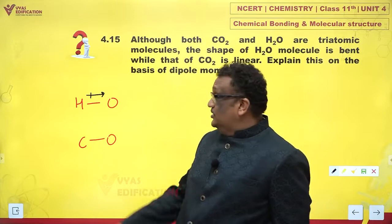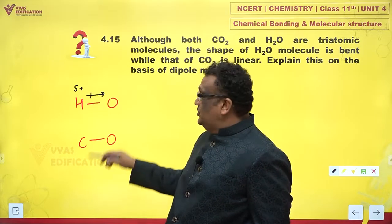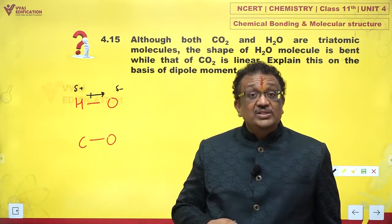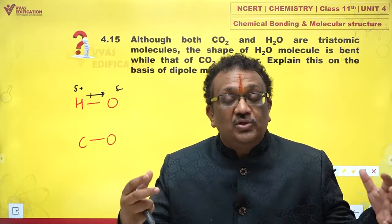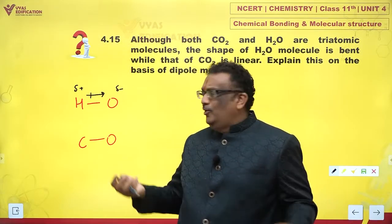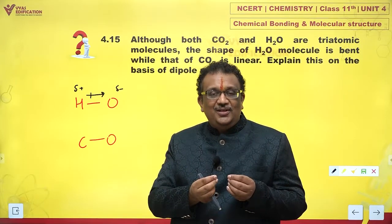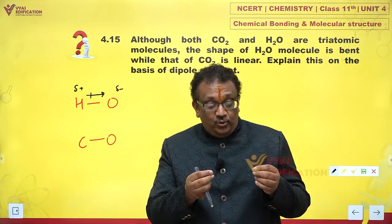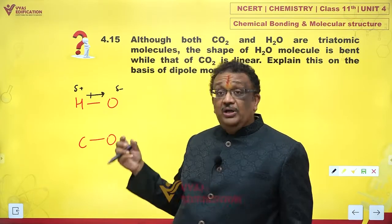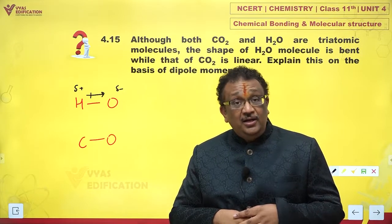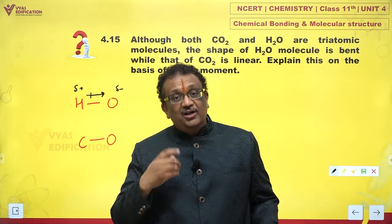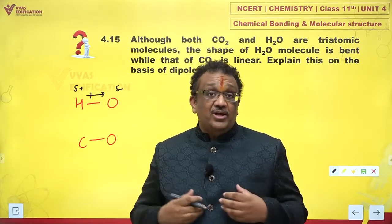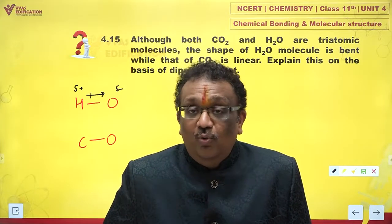If that is the case, hydrogen will develop a slightly positive charge and oxygen will develop a slightly negative charge. This is what we call an electrical dipole — two opposite charges, a positive charge and a negative charge of the same magnitude, separated by a small distance. How strongly this electrical dipole attracts or repels another electrical dipole — that strength is measured by a quantity called dipole moment.